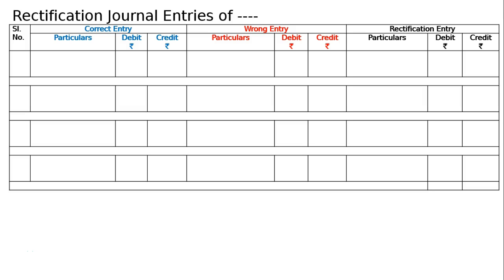The question is to pass the journal entries rectifying the following errors. For each error, we identify the correct entry, how it was written by mistake, and what the rectification entry should be to rectify the mistake. First, draw the format and start.